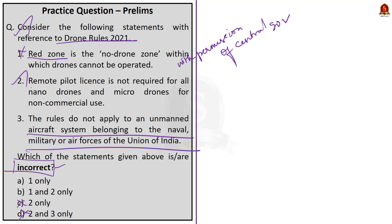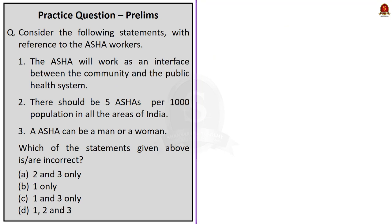Statement 2 is correct — no individual other than a holder of a valid remote pilot license on the Digital Sky Platform shall operate a UAS, but it is not required for nano drones and micro drones for non-commercial use. Statement 3 is also correct — the rules do not apply to naval, military, or air forces of the Union of India. So the incorrect statement is Statement 1 only — option A.